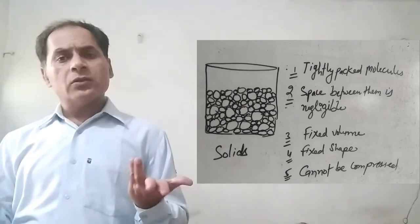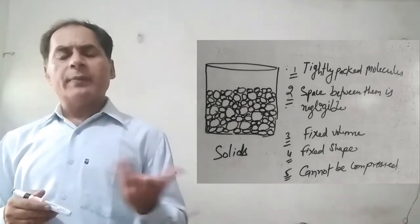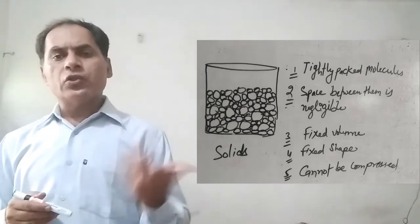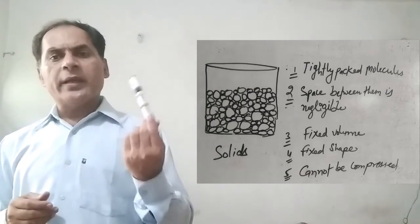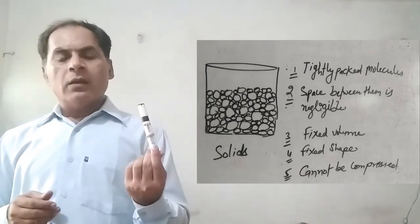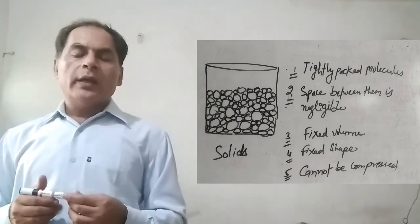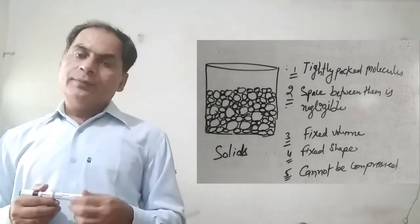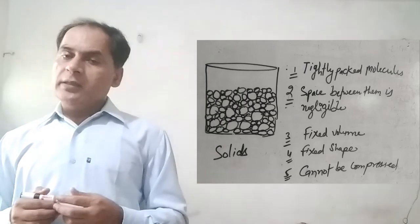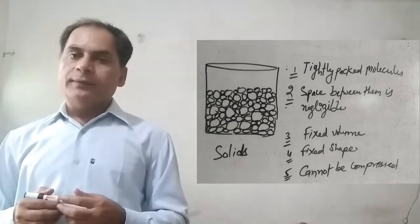Examples of the solid state are stone, pen, gold, and silver.